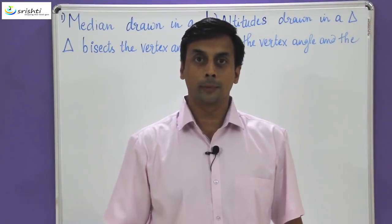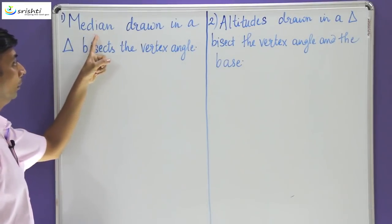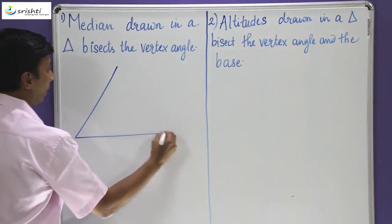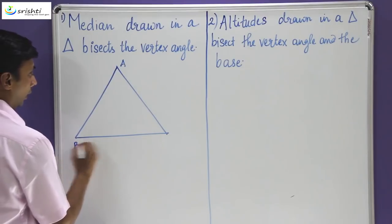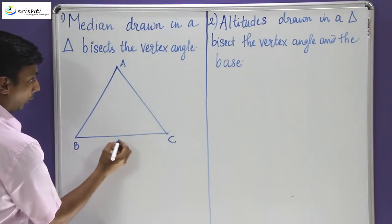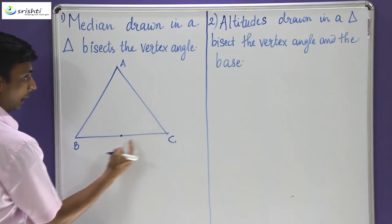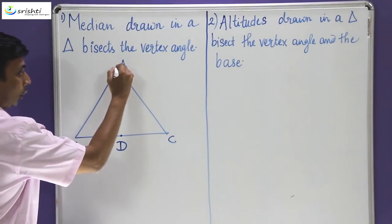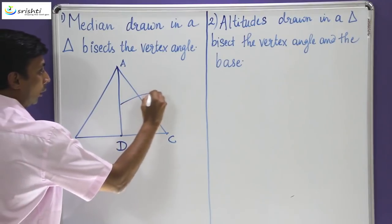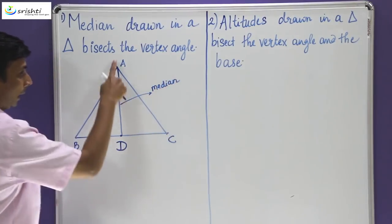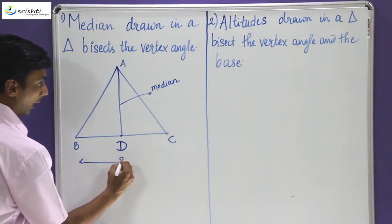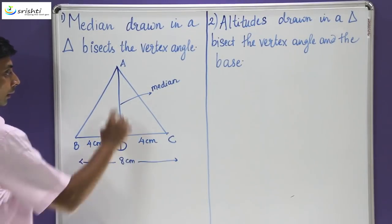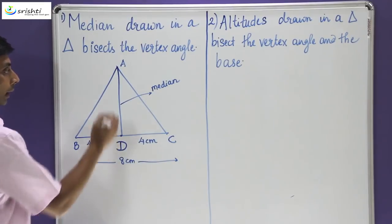Let's focus on the first two misconceptions. The first misconception was median drawn in a triangle bisects the vertex angle. Let's first understand what the term median is. Suppose I have a triangle ABC and I find the midpoint of side BC. Midpoint would mean a point which is equidistant from points B and C. So suppose we mark that particular point as D, that would mean the length of BD is equal to the length of DC. Now when I join A with this particular point, this line is called the median. This median is going to bisect the base into two equal parts. So suppose this complete length was eight centimeters, this is going to be bisected as four centimeters and four centimeters.